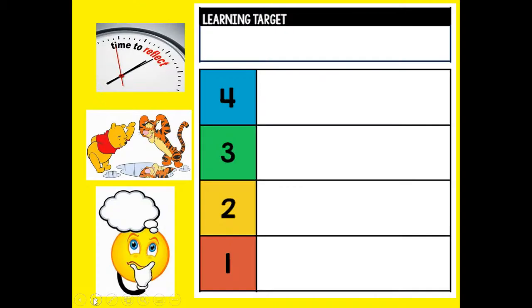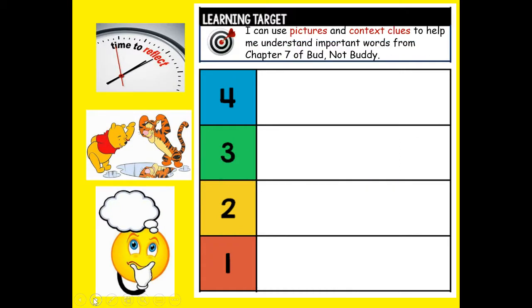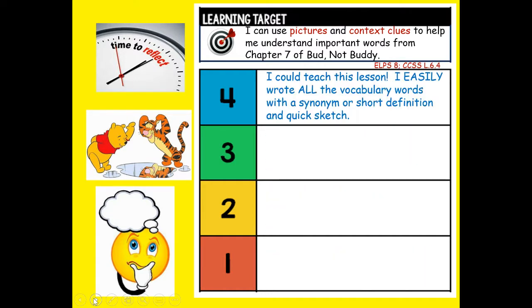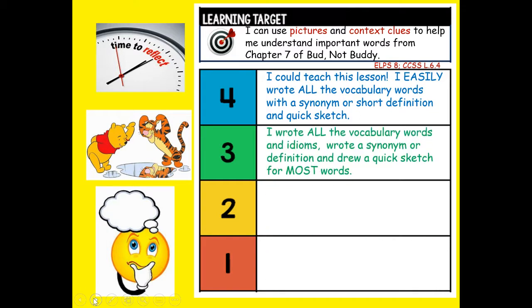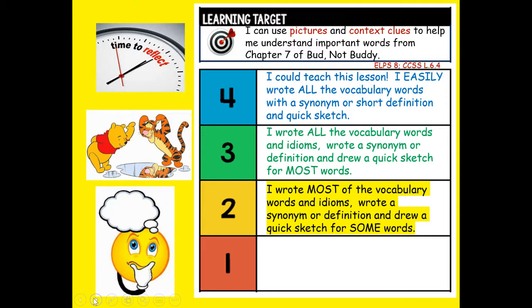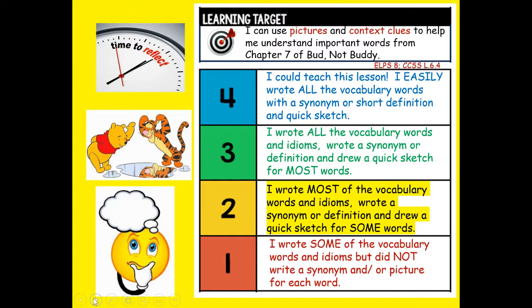It's a quick sketch. Let's review: I can use pictures and context clues to help me understand important words from Chapter 7 of Bud, Not Buddy. How do you think you did on a scale of 1 to 4? Four means you could teach this lesson. Three means you wrote all vocabulary words with a synonym and quick sketch for most. Two means you wrote most words with some sketches. One means you wrote just some vocabulary but didn't write a synonym or draw a picture. Write your reflection grade at the top. Thanks for doing the vocabulary words with me — have a great day!